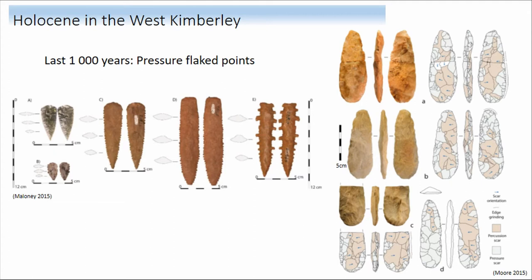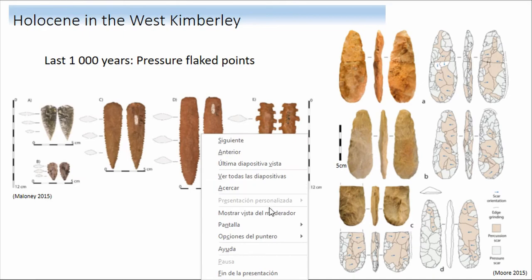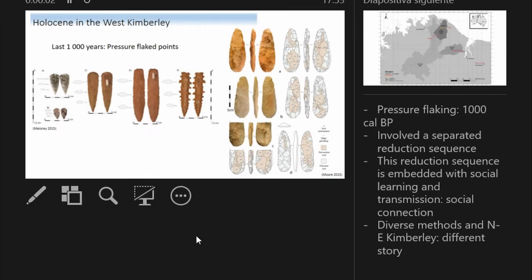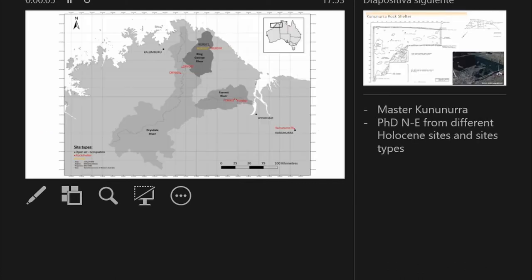The data from my master thesis and from my PhD tend to tell a somewhat different story. Outside of lithics, rock art from the Eocene and mid-Holocene — approximately 6,000 BP — seems to show more regional variation. I'm going to now present my master thesis data.